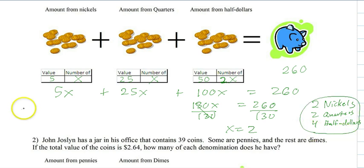How do we know we're correct? We just do a quick check. So that means we have 2 nickels, we have 2 quarters, and we have 4 half dollars. And these all have to add up to 260. So let's see what we have. That's 10 cents, that's 50 cents, and that's 200. For a total of 260, checks out perfectly.